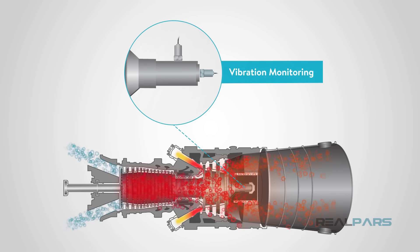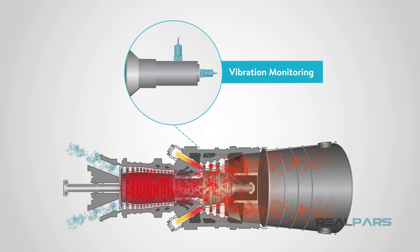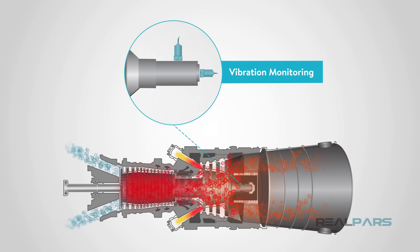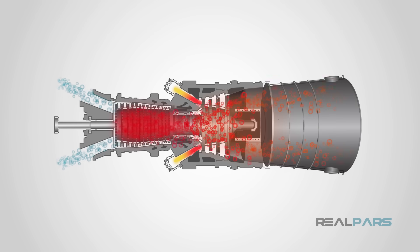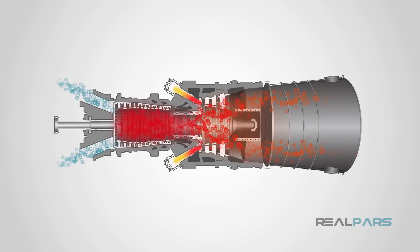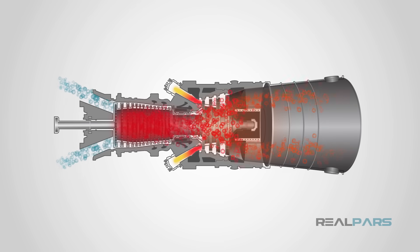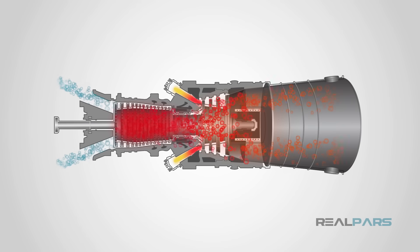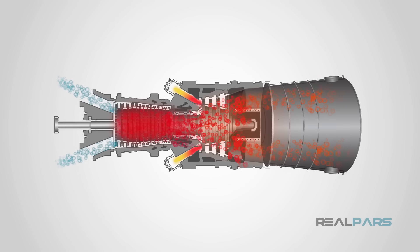Vibrations — both axial and radial — and speeds at both the air compressor and gas turbine should be continuously taken into consideration. This was the simplest way to address the major parts of gas turbines, and as one of the most sophisticated man-made machines, a gas turbine deserves more elaboration. There are also different proprietary technologies used by some manufacturers that were not considered in this video.